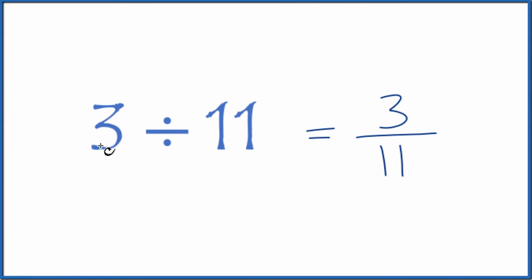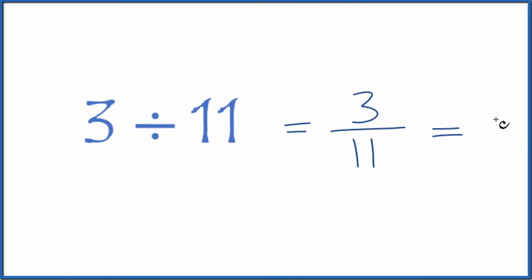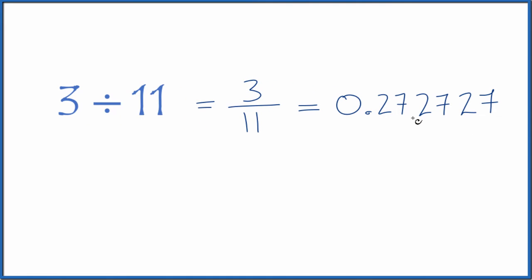You could also just, on a calculator, take 3 and divide it by 11. 3 divided by 11, that gives you 0.272727.